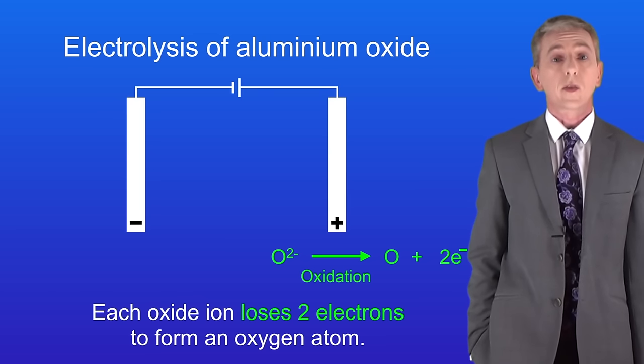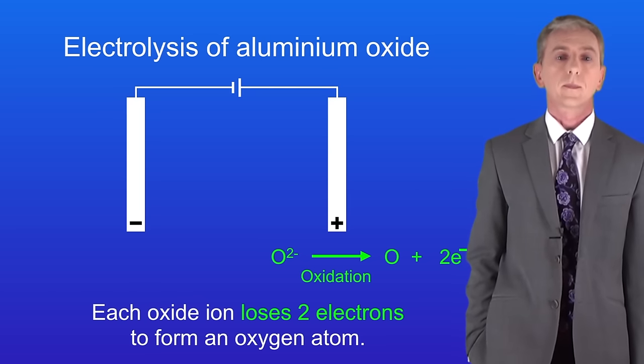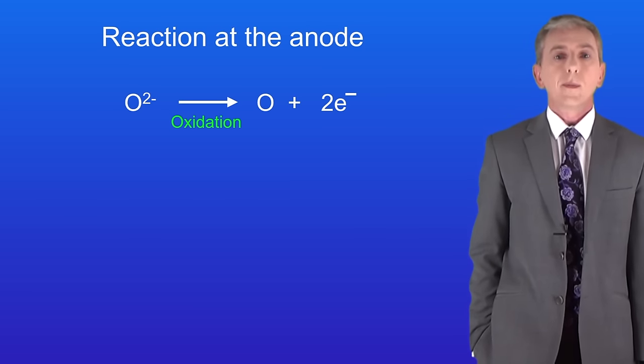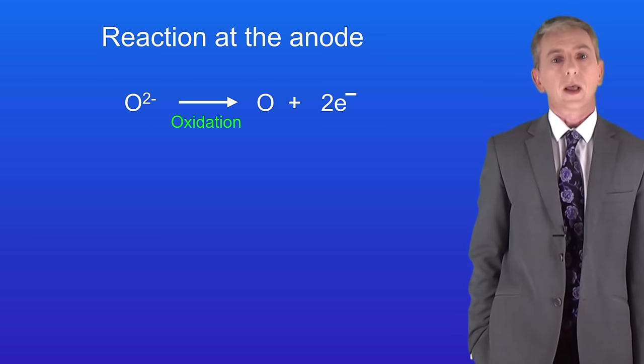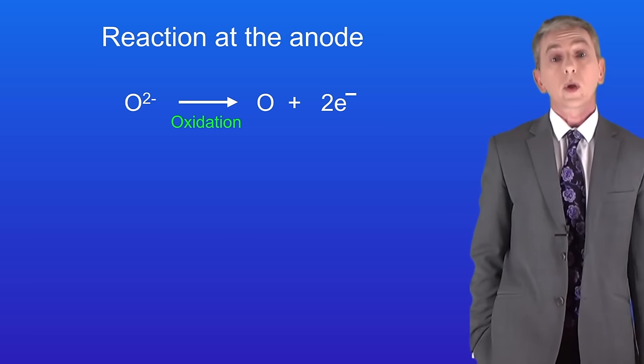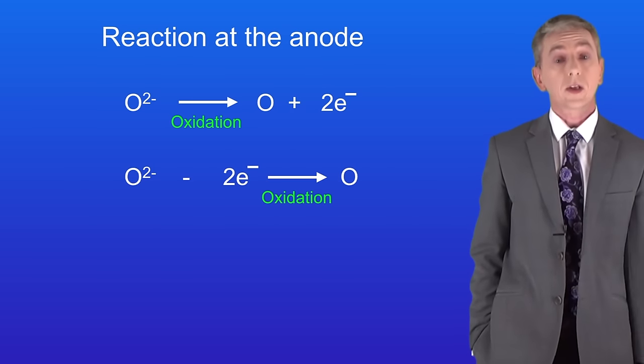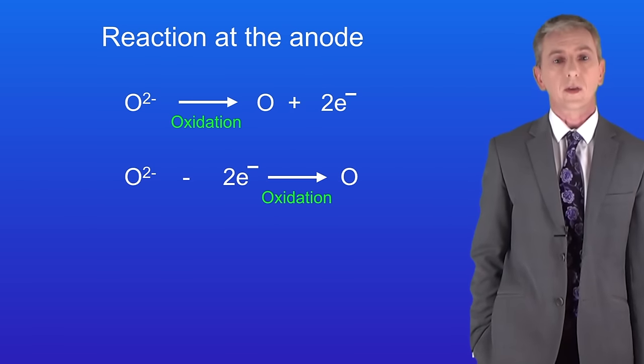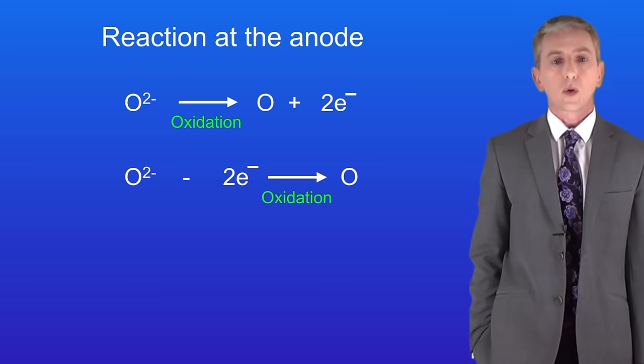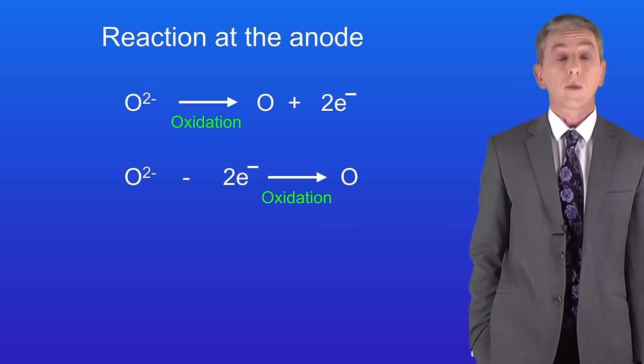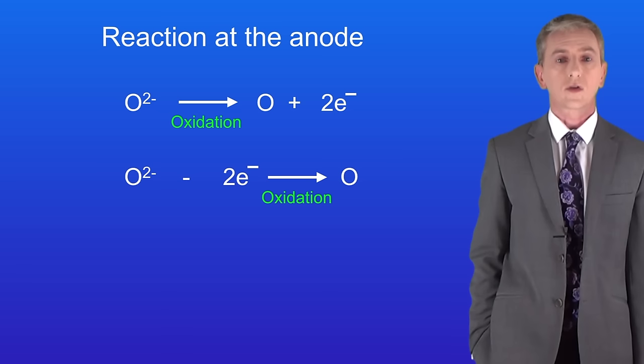Now there are some points about the reaction at the anode that we need to look at. We've already seen the half equation for the anode. Remember that oxide ions are losing two electrons to form oxygen atoms. We can also write the half equation like this. You could see either of these versions of the equation in the exam but remember that they both show the same thing. They both show two electrons being removed from an oxide ion to produce an oxygen atom.